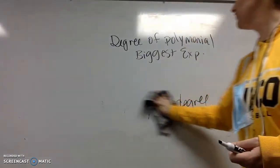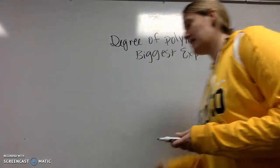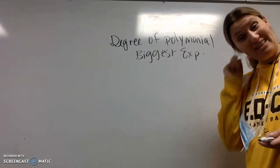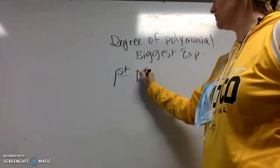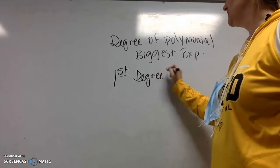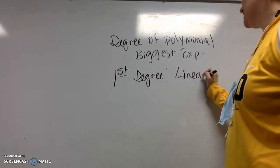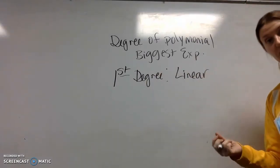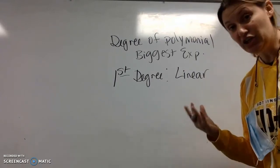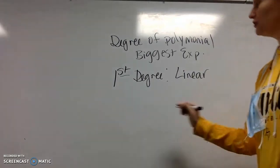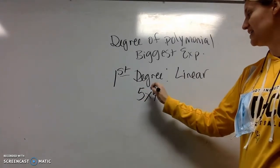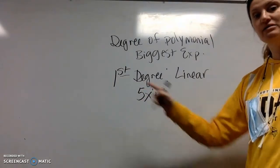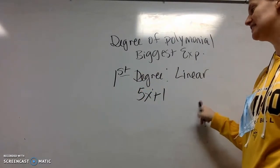Now, just like with terms, we do have special names for some of them. So if you have a first degree polynomial, that is actually called a linear polynomial. So instead of saying first degree, we would say linear. Now, it's going to look familiar to you because here is an example of a first degree: 5x plus 1, because the exponent is technically a 1, which makes it first degree. This is linear.